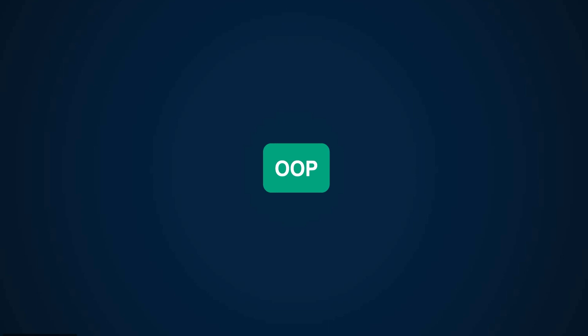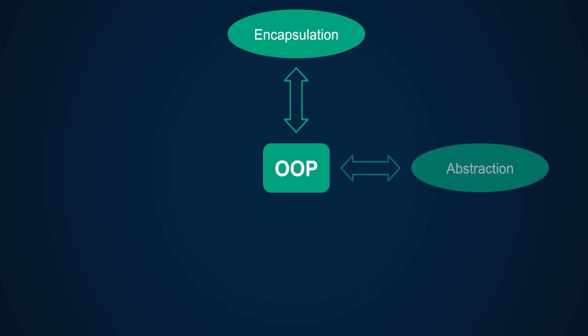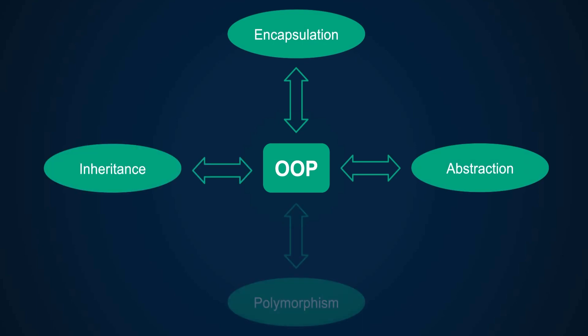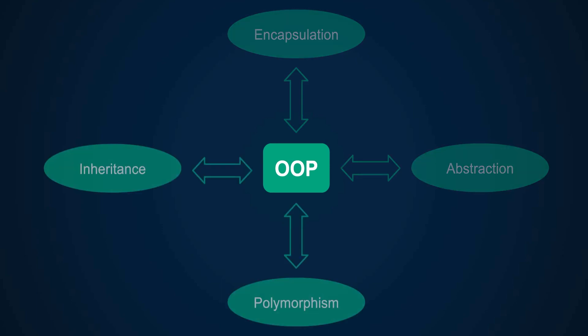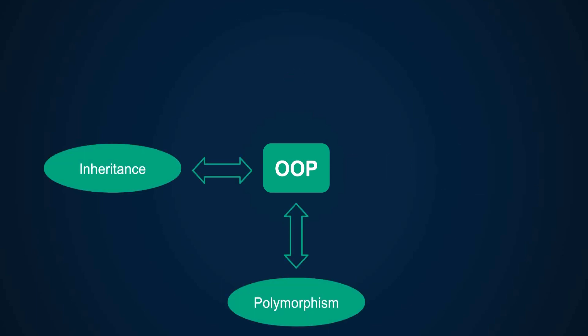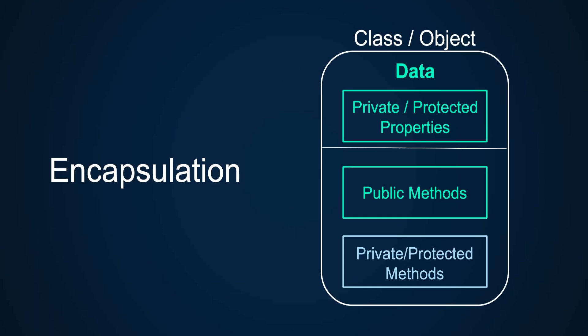We are slowly but surely advancing into more fun, interesting, and advanced topics. With basics out of the way, let's talk about the four principles of object-oriented programming: encapsulation, abstraction, inheritance, and polymorphism. In this video we'll cover encapsulation and abstraction, and in the next video we'll talk about inheritance and polymorphism.